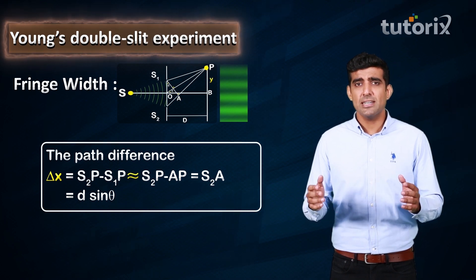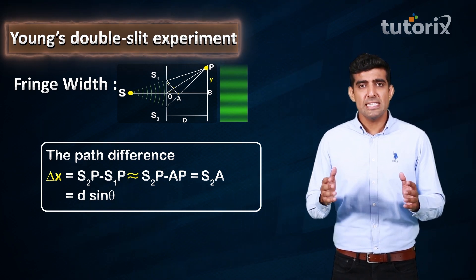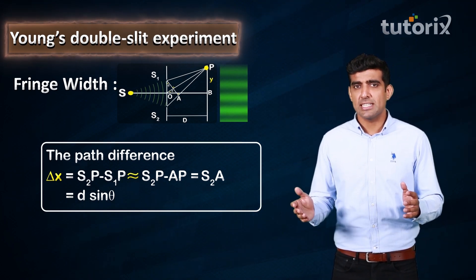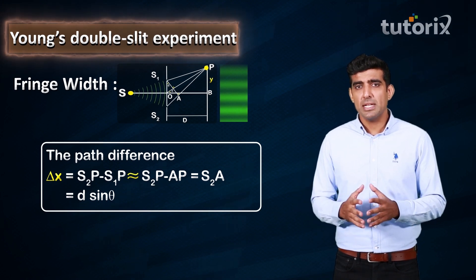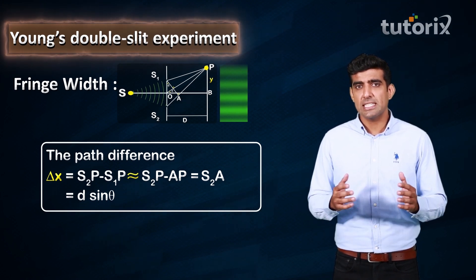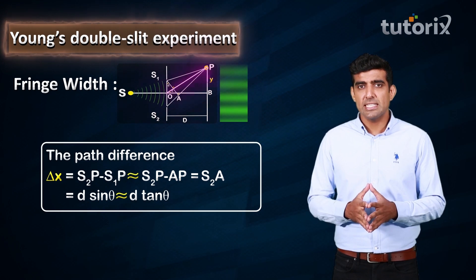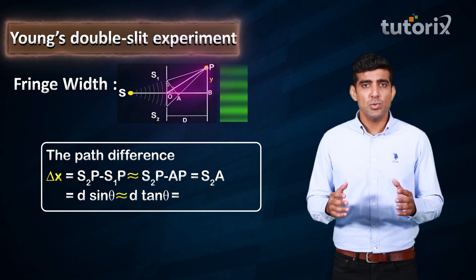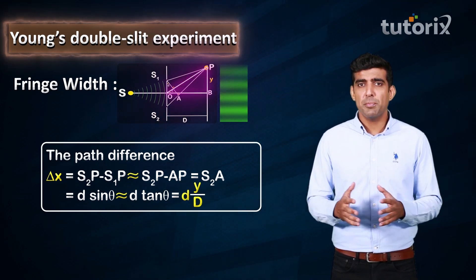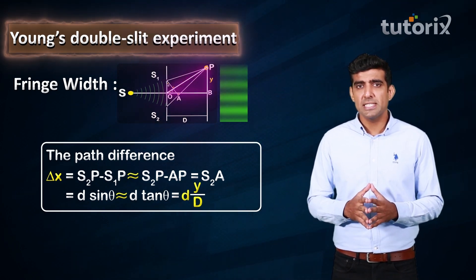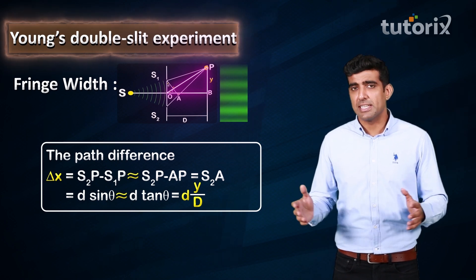Since θ is a small angle, sin θ can be written as tan θ. Therefore, the path difference is d·tan θ. Here, tan θ = y/D. Therefore, the path length difference can be written as d·y/D.